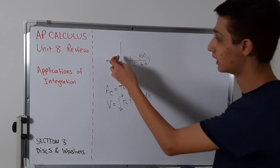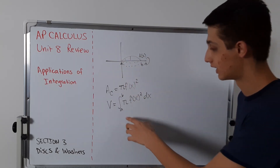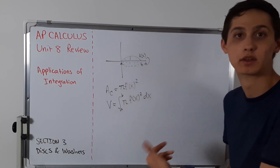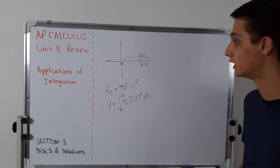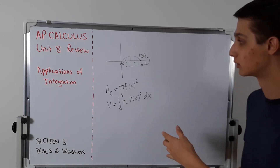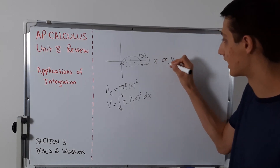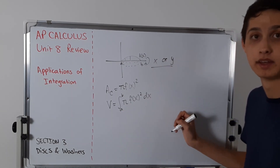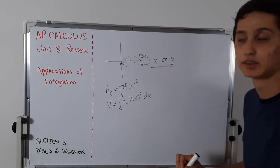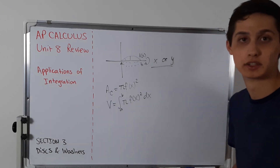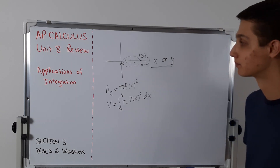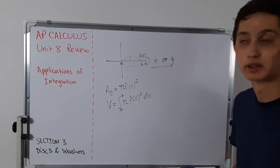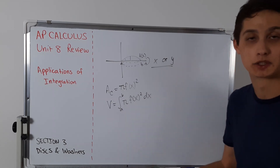It could also be rotating around the y-axis. In that case, you take the integral from a to b where a and b are y-coordinates, of pi times f(y) squared dy. Make sure you know whether it's rotated about the x-axis or the y-axis. If it's the x-axis, use this formula; if it's the y-axis, change everything to y's. You actually have to convert your function of x into a function of y — you can't just substitute y for x.